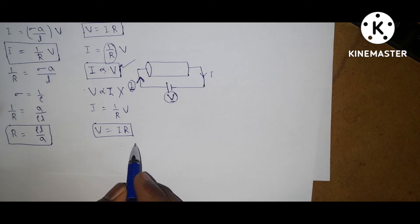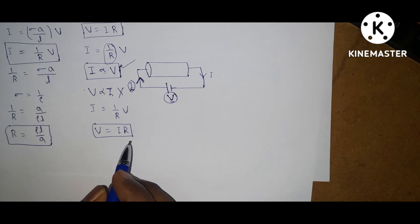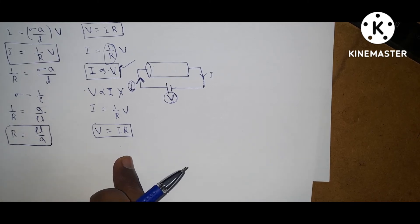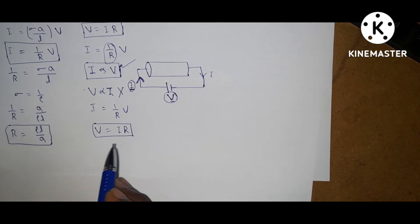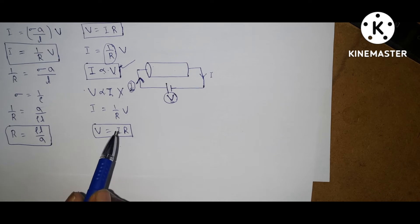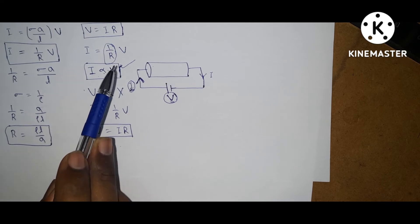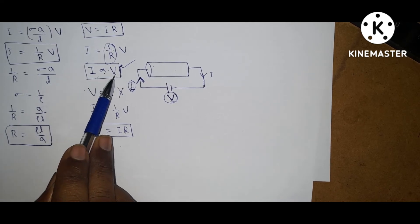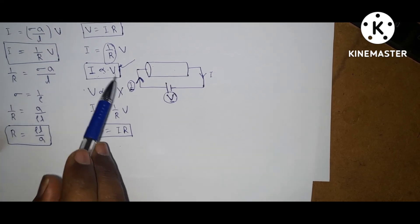There is one important point here — the limitation of Ohm's law. Temperature should be constant. So, Ohm's law can be defined as: at constant temperature, the current is directly proportional to the voltage.